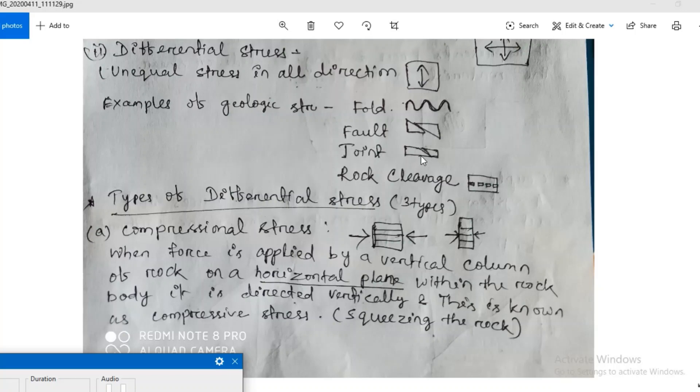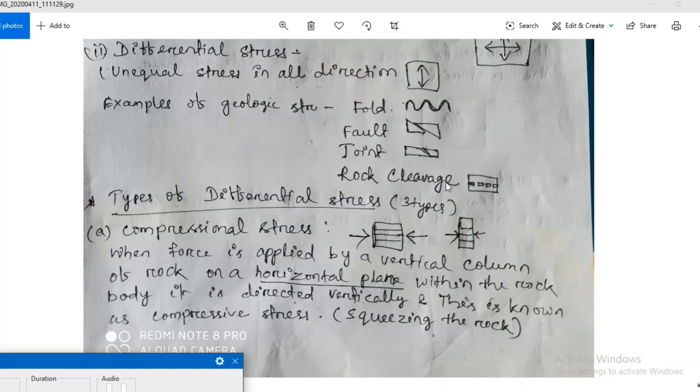Lastly, you get rock cleavage. We know rock consists of minerals and crystals. Minerals and crystals have definite cleavage planes. If deformation occurs in that cleavage plane, then it is known as rock cleavage.